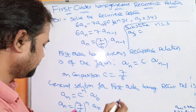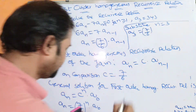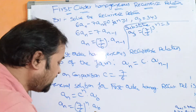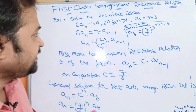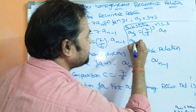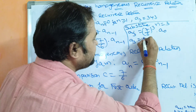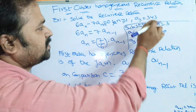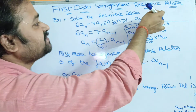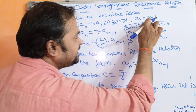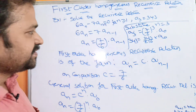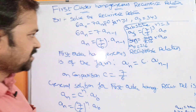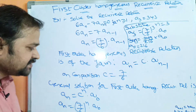A3 = (7/6)^3 · A0. Since 7^3 = 343 and 6^3 = 216, this becomes 343 = (343/216) · A0. Cancelling 343 on both sides, A0 = 216.